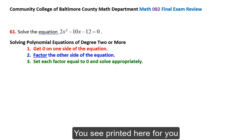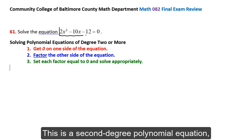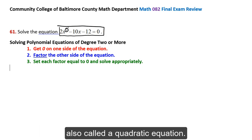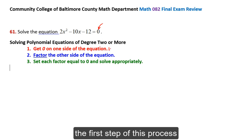You see printed here for you the general three-step process for solving a polynomial equation of degree 2 or higher. This is a second-degree polynomial equation, also called a quadratic equation. With zero on one side of the equation, the first step of this process has already been accomplished.